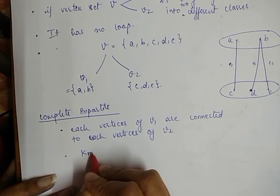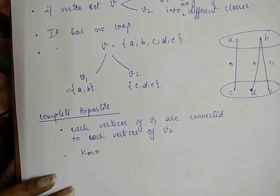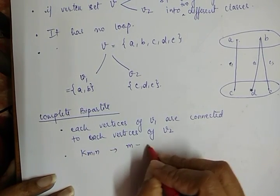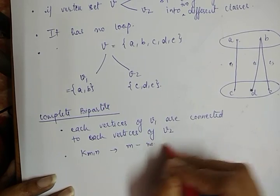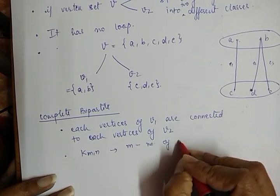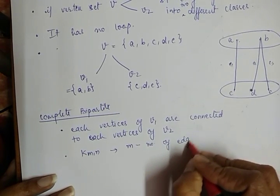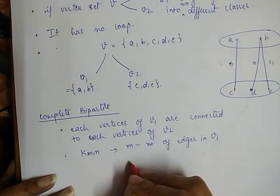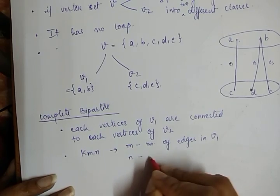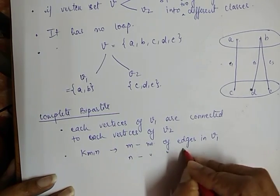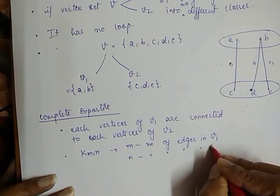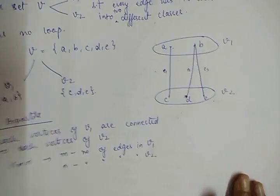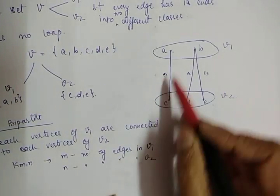The second point is that it is denoted by K(m,n), where M denotes the number of vertices in V1 and N denotes the number of vertices in V2.